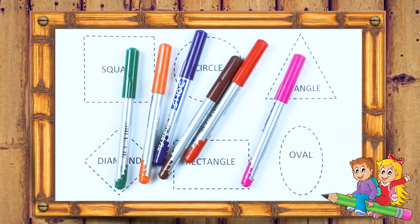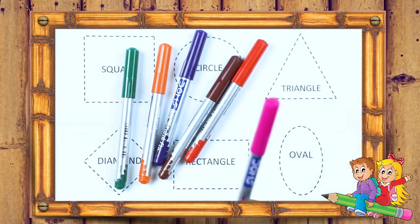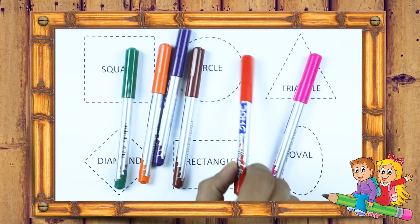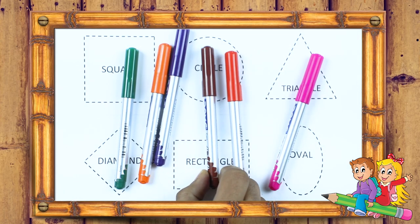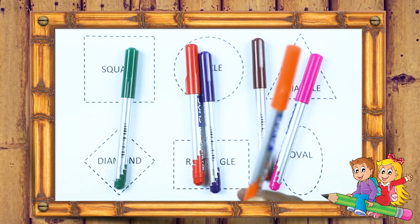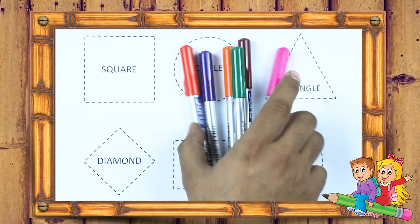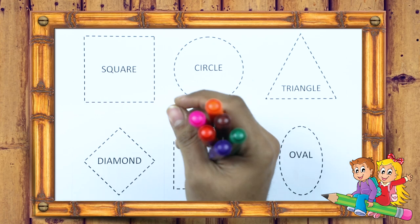We learn shapes with some colors. It's a pink color, red color, brown color, purple color, orange color, green color. So let's start. Learn shapes.